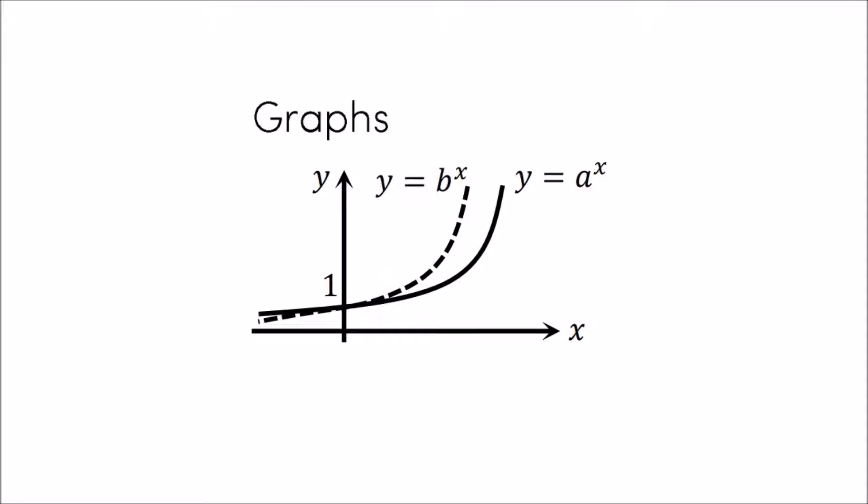This means the graph never reaches the x axis. It has an asymptote on the x axis. They also have a y intercept at 1 because the x value on the y axis is 0 and anything to the power of 0 is 1.